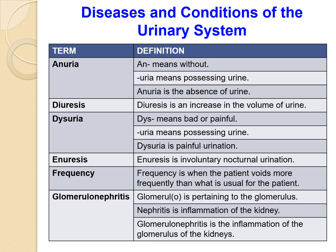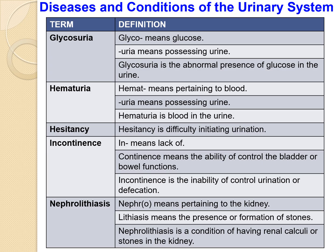Urinary frequency is when the patient voids more frequently than what is usual for the patient. The next is glomerulonephritis, which pertains to the glomerulus. Nephritis is inflammation of the kidney, so glomerulonephritis is the inflammation of the glomerulus of the kidney.